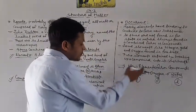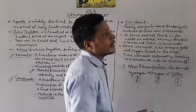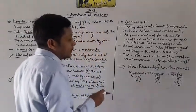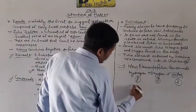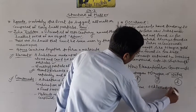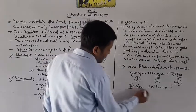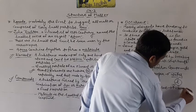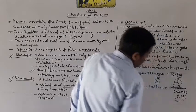Similarly, aisa bhi hota hai ki do poisonous chemicals milkar hamare use ki ek cheez dete hain. Two poisonous elements combined together give us a useful compound. Like, baat karte hain sodium ki — sodium plus chlorine. Separately dekha jaye to ye dono hamare liye chemically harmful hain. But when these two combine, they give us sodium chloride, that is, a salt.